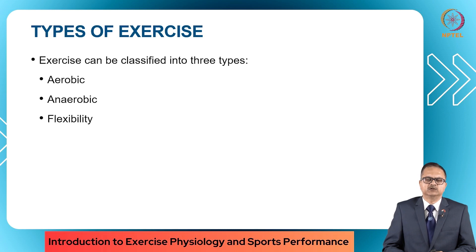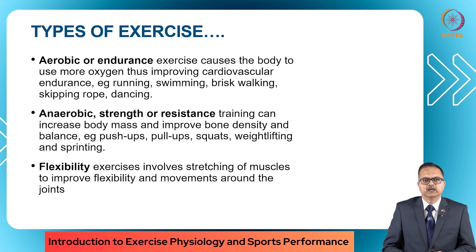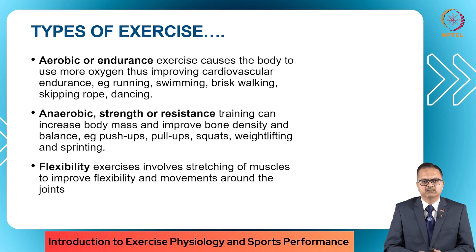Exercise can be classified into three types: aerobic, anaerobic, and flexibility. Aerobic or endurance exercise causes the body to use more oxygen, thereby improving cardiovascular endurance — examples include running, swimming, brisk walking, skipping rope, and dancing. Anaerobic or resistance training can increase body mass and improve bone density and balance — examples are push-ups, pull-ups, squats, weightlifting, and sprinting. Flexibility exercises involve stretching of muscles to improve flexibility and movement around the joints.